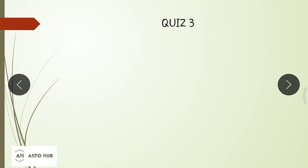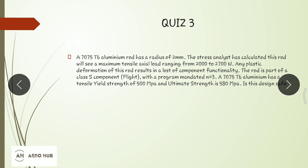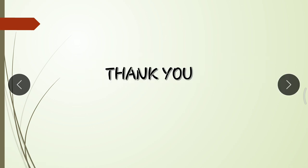Here is the question for this lecture: a 7075-T6 aluminium rod has a radius of 2 mm. Stress analysis shows the rod experiences a maximum tensile axial load ranging from 2000 N to 2700 N. Any plastic deformation results in loss of functionality. The rod is a Class S component with a mandated safety factor N = 3. The material has a tensile yield strength of 500 MPa and ultimate strength of 580 MPa. Determine if the design is safe — if the calculated safety factor is above 3 it is not safe; if below 3 it is safe.